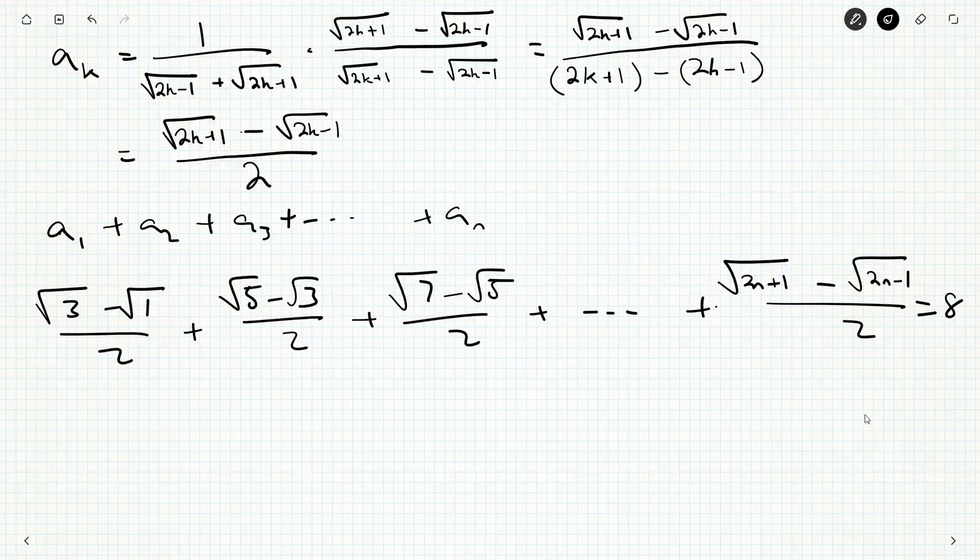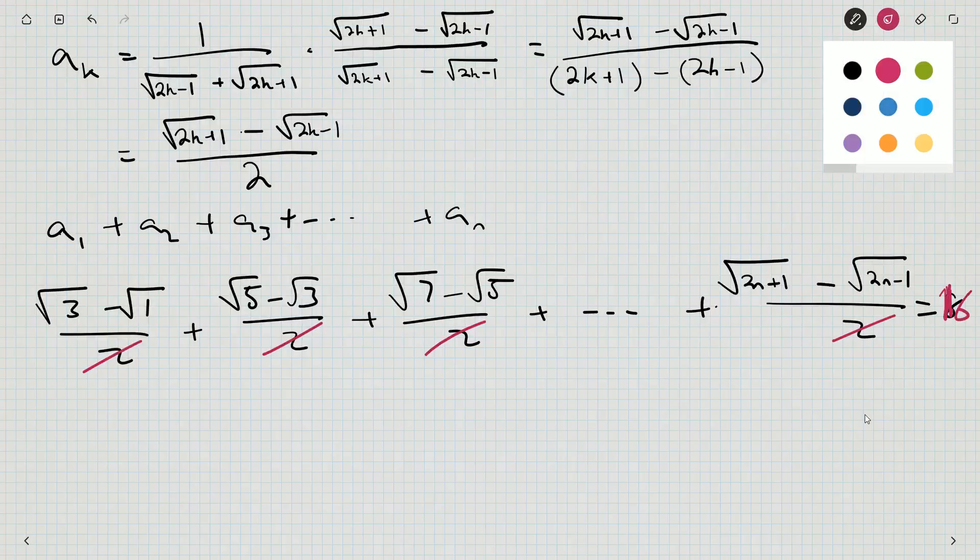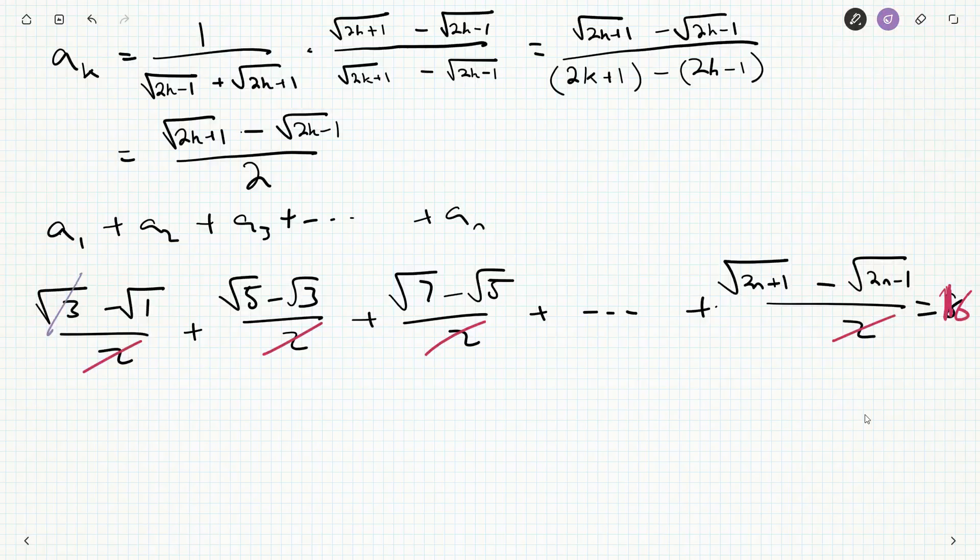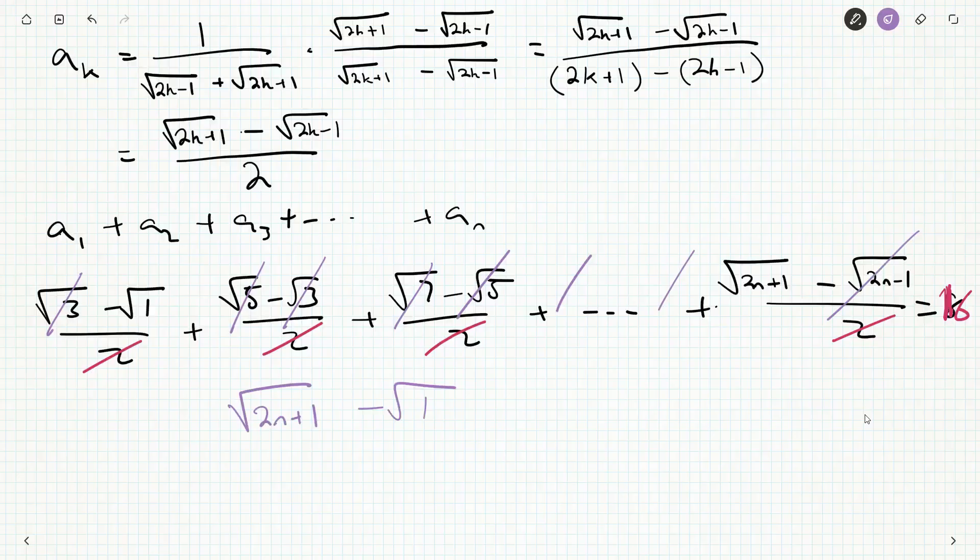Well, that's the same as if we got rid of all the 2s and made this 16. But look what's left now. We've got a telescoping sum. So the root 3 here and the minus root 3 go away. The root 5s go away. The root 7s go away. And we keep going. And then the root 2n minus 1s go away. And now we're left with root 2n plus 1 minus root 1 is equal to 16.